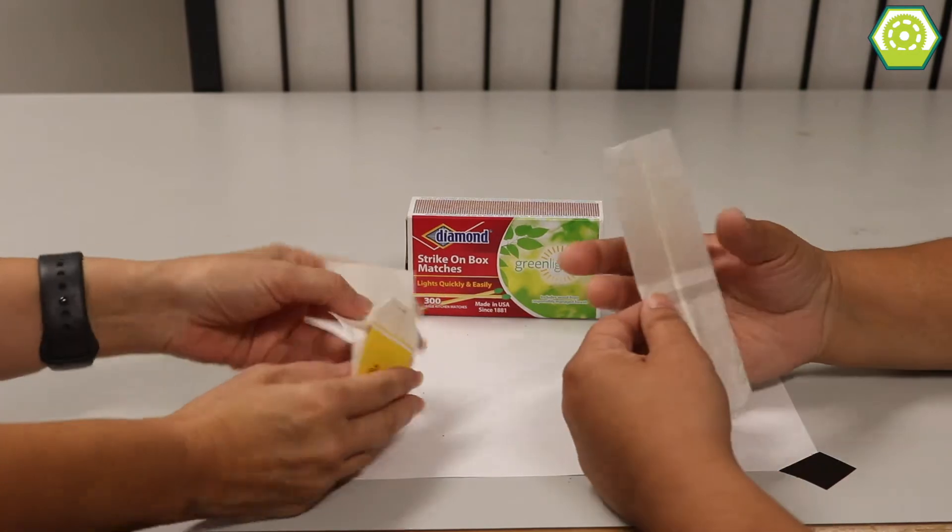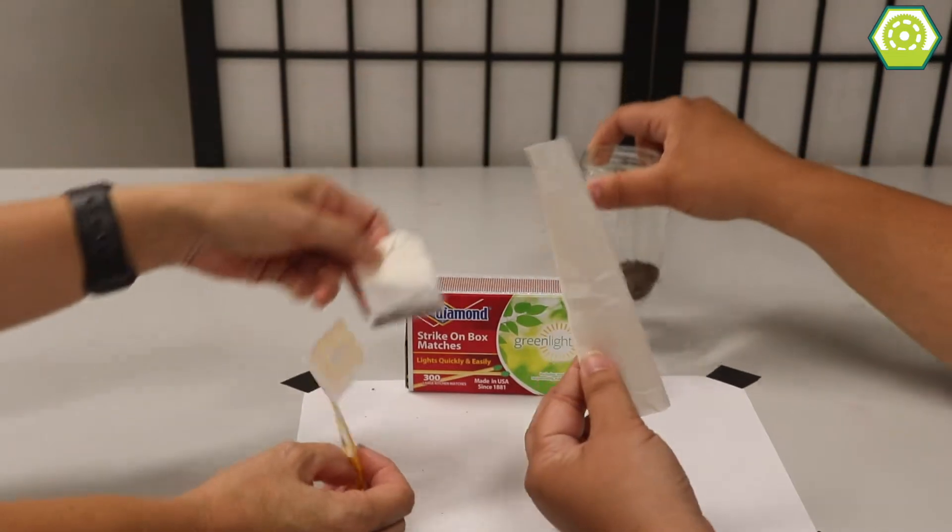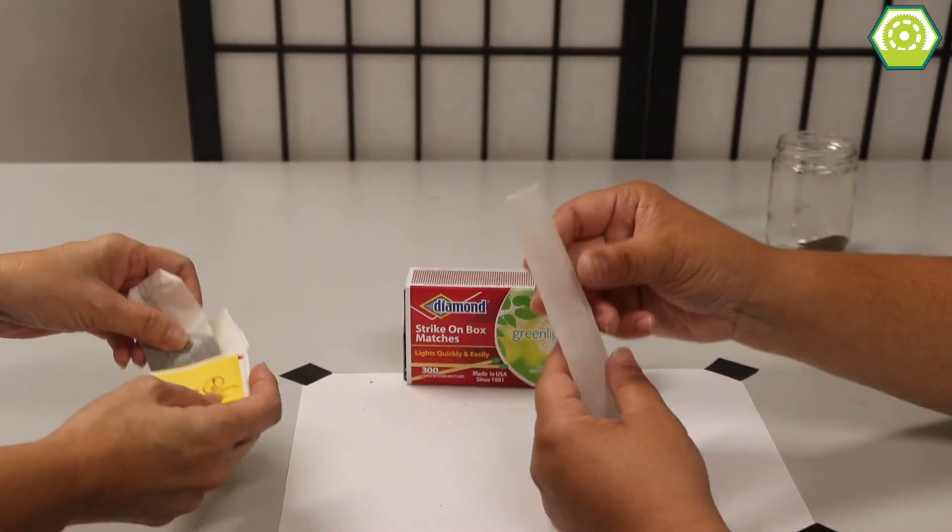So these are regular old tea bags and what we've done is we've opened them up and we've just dumped the tea out. Once you dump out the tea they're kind of like these long tubes.